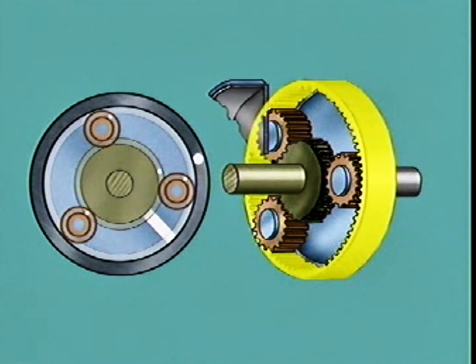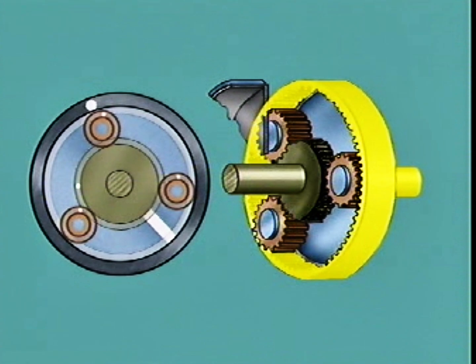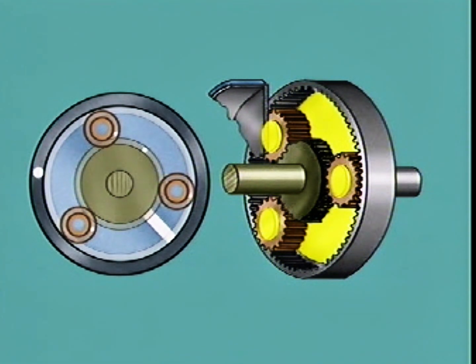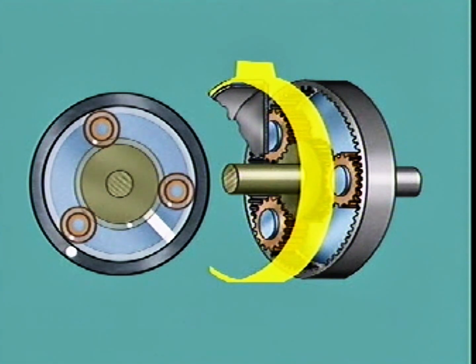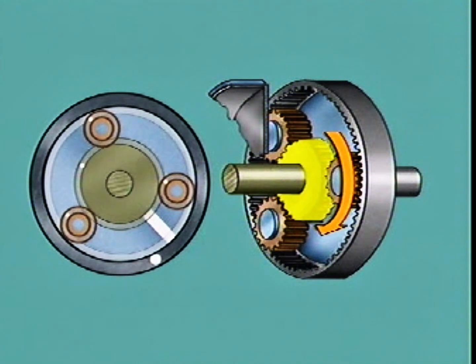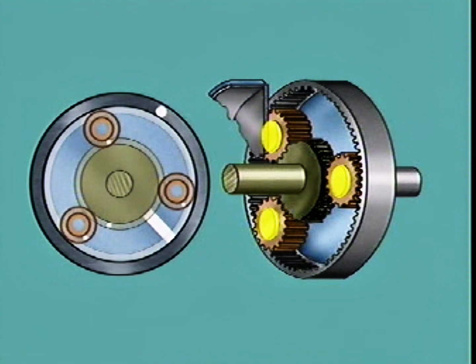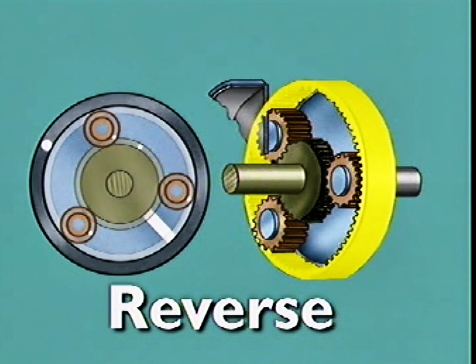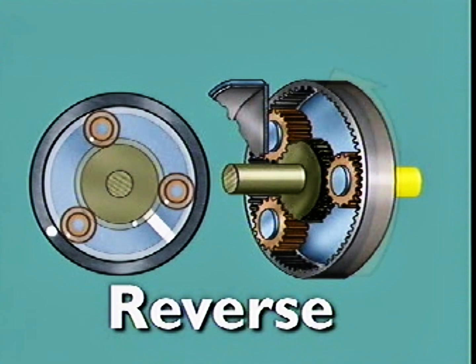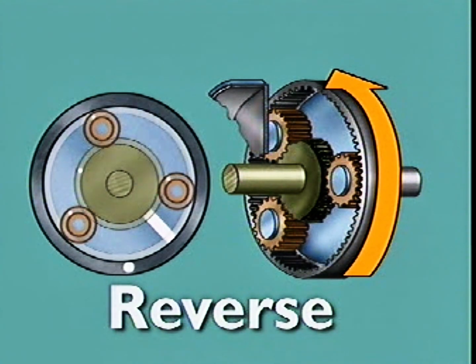For reverse, the ring gear is attached to the output shaft and the planet carrier is held stationary by a brake band. Rotating the sun gear causes the planet gears to idle on their stationary pins. This turns the ring gear and its output shaft in the opposite direction to engine rotation.